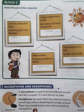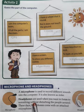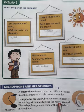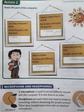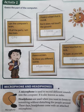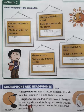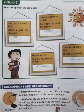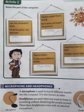Now what are headphones? Headphones are used when you want to listen to something without disturbing the people around you. You want to listen to music, or any poem, or any music — in that case you can use headphones. By using headphones you will not disturb the other people. These days headphones come with an attached microphone.